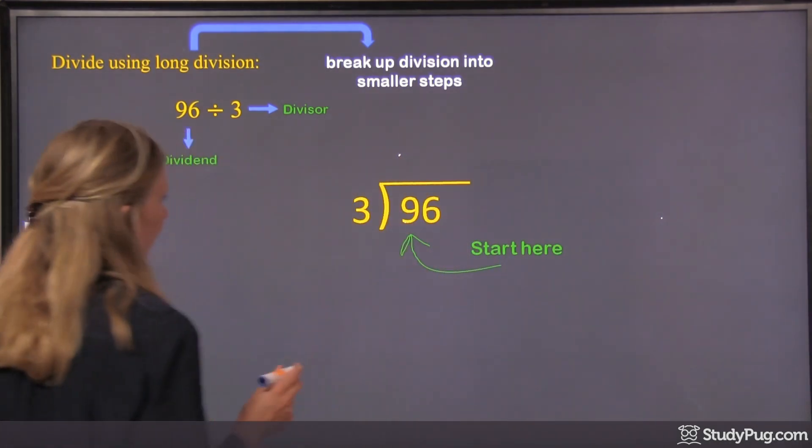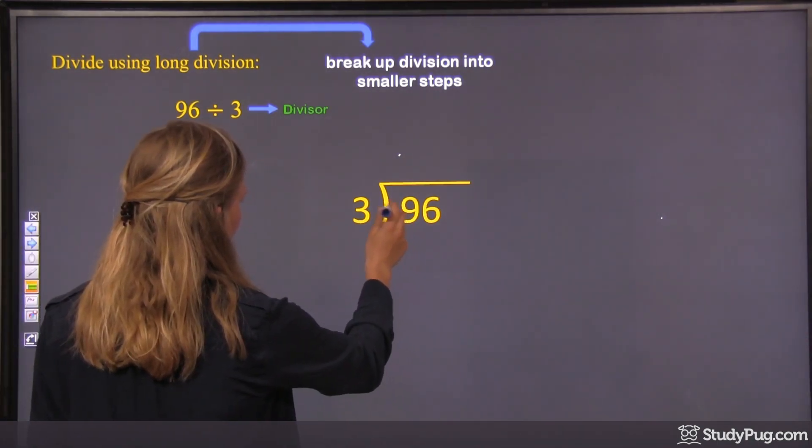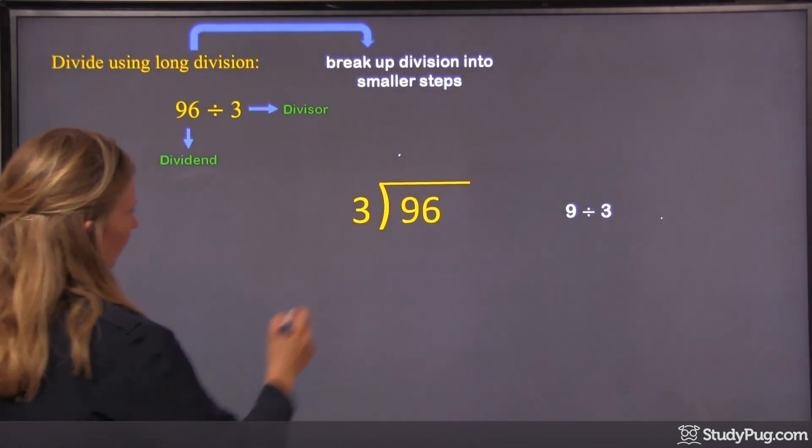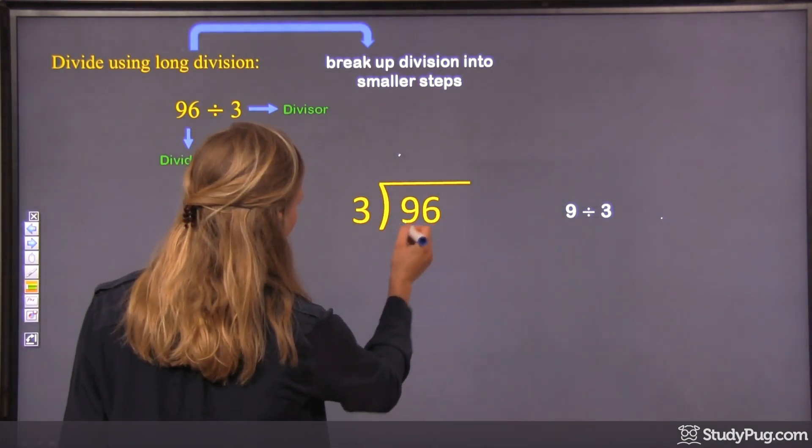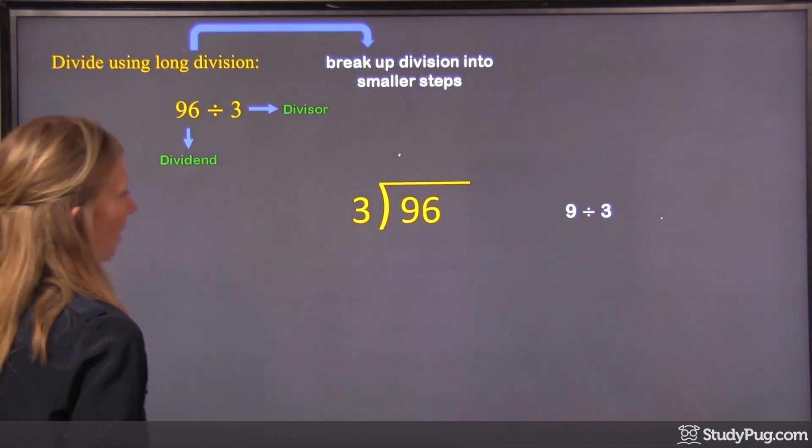Okay? So the first step that we're going to do in this question is 9 divided by 3. So we take our biggest place value, and we divide it by the divisor, which is on the outside.